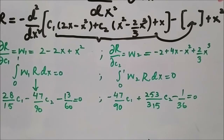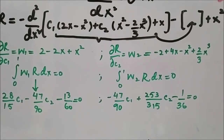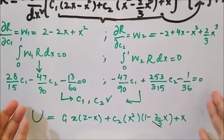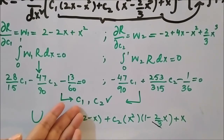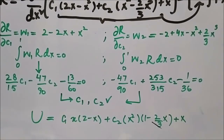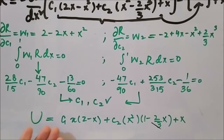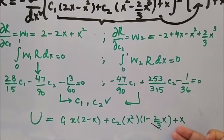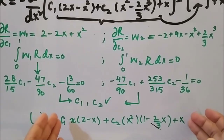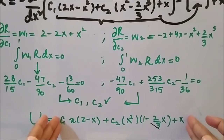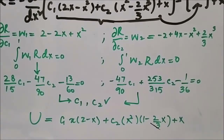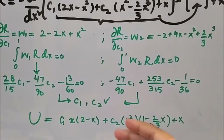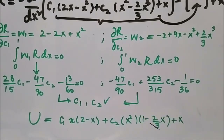After integration, we have two equations that we must simplify to get the values of c1 and c2. After solving these two equations we obtain values for c1 and c2. The last step is to plug c1 and c2 into the approximated function u = c1*phi_1 + c2*phi_2 + phi_0, and simplify to get a compact polynomial in powers of x.